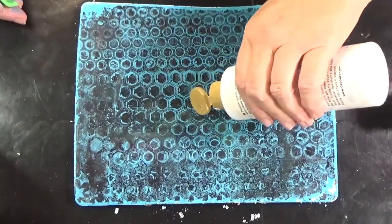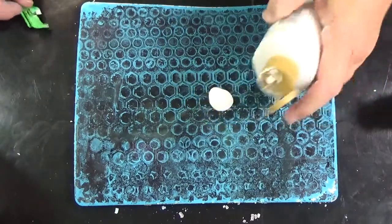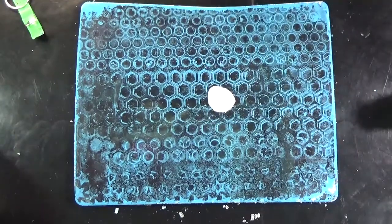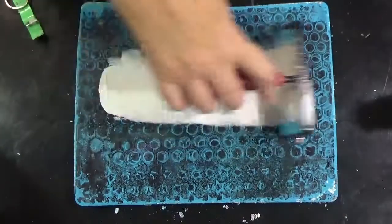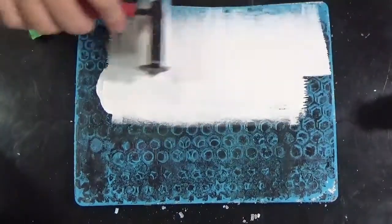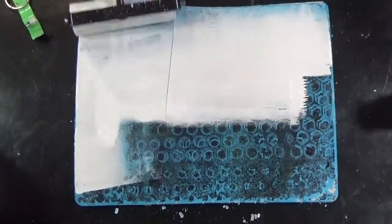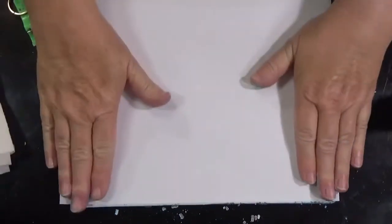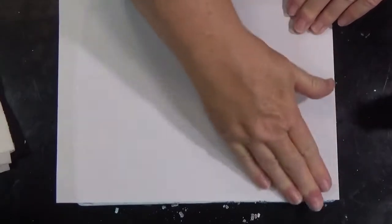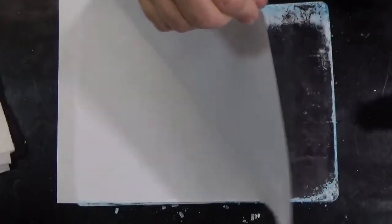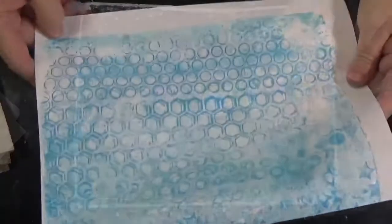We're going to use some Snow White as a cleanup print to clean up everything that we have on our gel plate at present. And there we have another print.